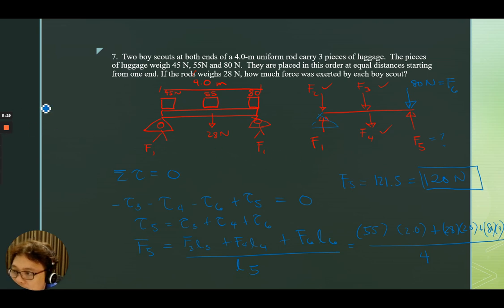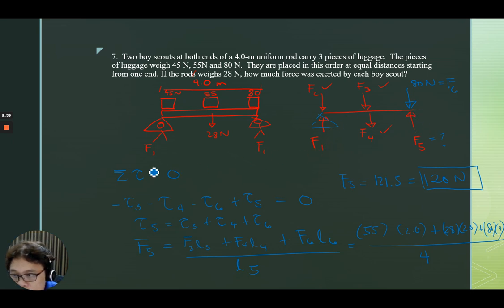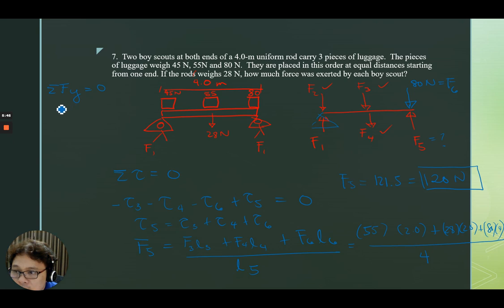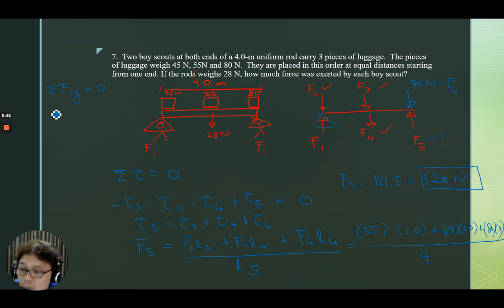What about F1? There are two ways of solving this — you can put an imaginary torque at F1 and solve using the torque equation, or you can use the summation of forces along the Y equal to zero, because the upward forces equal the downward forces.